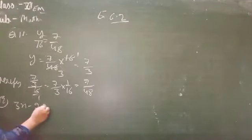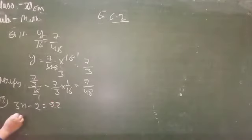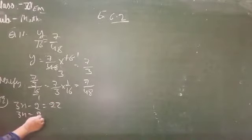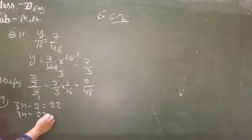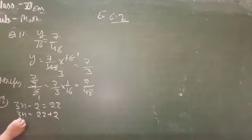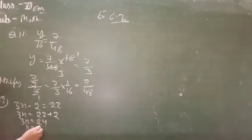Question 12: 3n minus 2 equals 22. 3n equals 22, this minus 2 goes where? Plus 2. 3n equals 24. And n equals 24 divided by 3, which equals 8. So 3 into 8 equals 24, so n is 8.